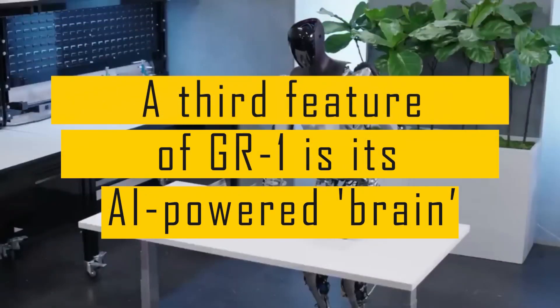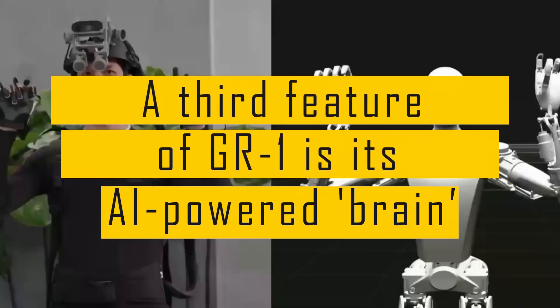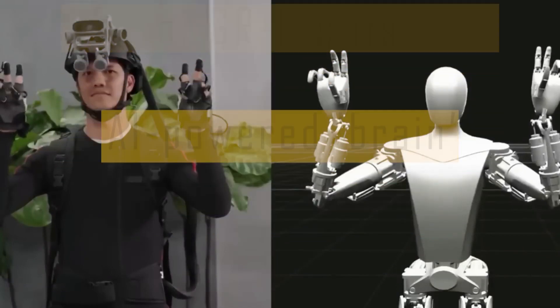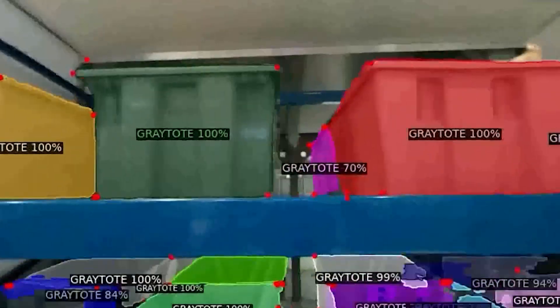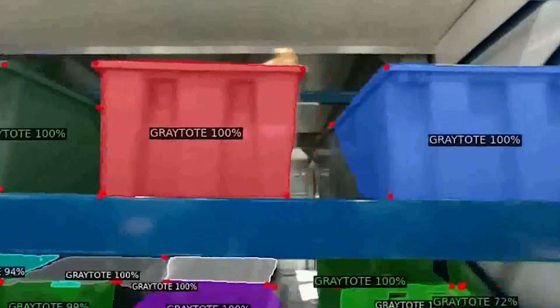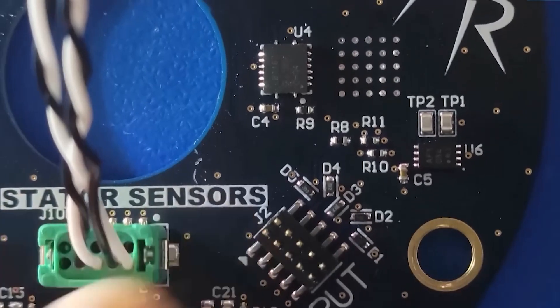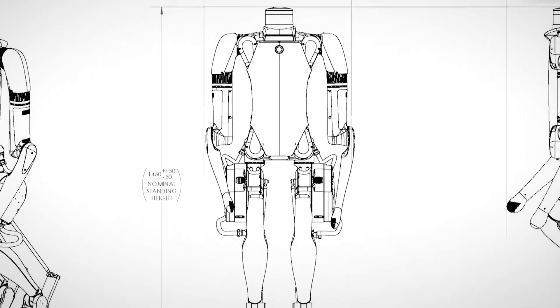A third feature of GR1 is its AI-powered brain. GR1 is not just a mechanical device but an intelligent agent that can learn from data and interact with humans. GR1 uses deep learning, a branch of AI that uses neural networks to learn from data, to process visual, auditory, and tactile information.